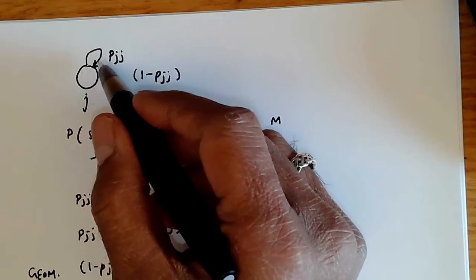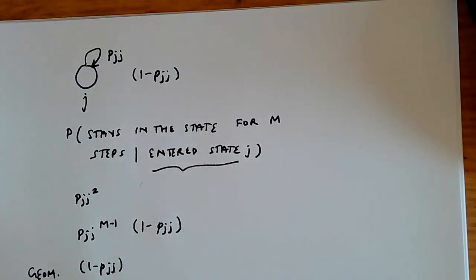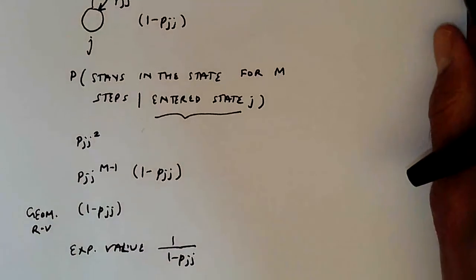And conversely, if pjj is very small, you're not going to be here very long, then this value is close to 1, and the mean residence time is going to be very close to just 1.